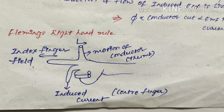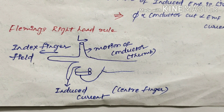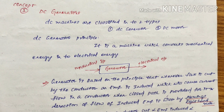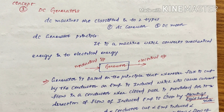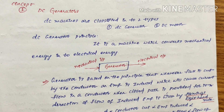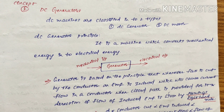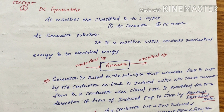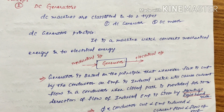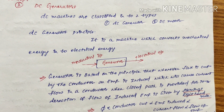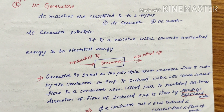Fleming's Right Hand Rule: the thumb finger indicates the motion of the conductor (conductor rotation), the index finger indicates the field created, and the center finger indicates the induced current. In summary, a DC generator converts mechanical energy into electrical energy. Whenever a conductor cuts flux, EMF is induced, resulting in current flow in a closed loop.